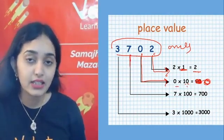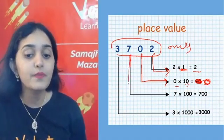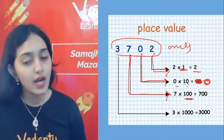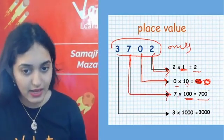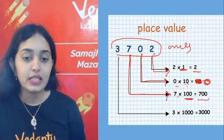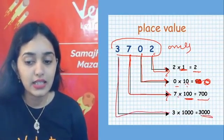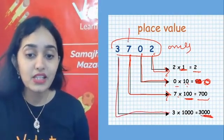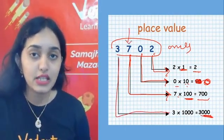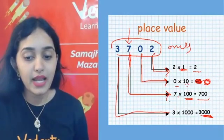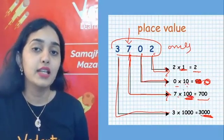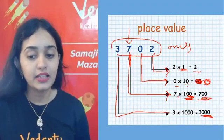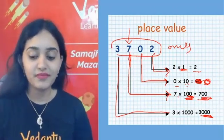What is the value of 3 in 3,702? It is at the thousands place, so 3 × 1000 = 3000. So whenever anyone asks you the place value of a digit in a number, you multiply it by the place value of that position to get the value of that digit.